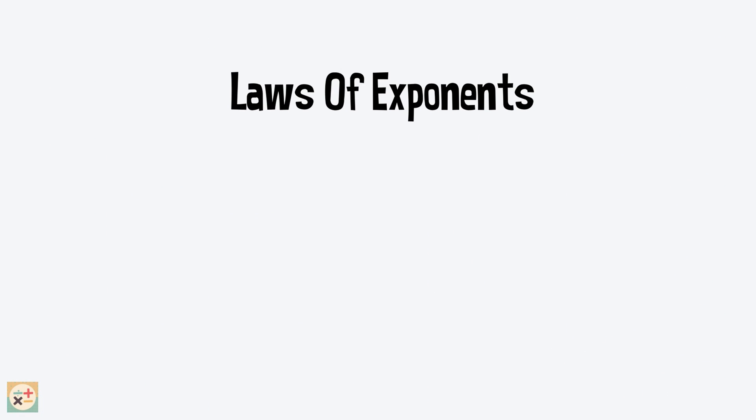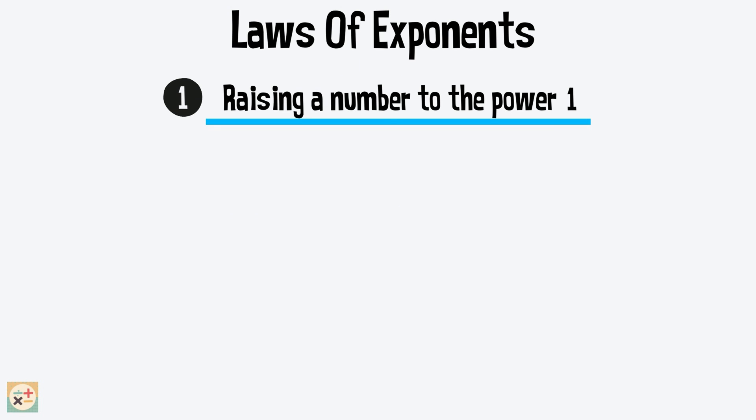The first rule sets out what raising a number to the power 1 means. Whenever we have a number to the power 1, it is equal to itself. Have a look at this example. Remember if we were to multiply 7 by 7 we would write 7 to the power 2. But when we want to keep 7 as itself, we can use the power 1 to represent this.